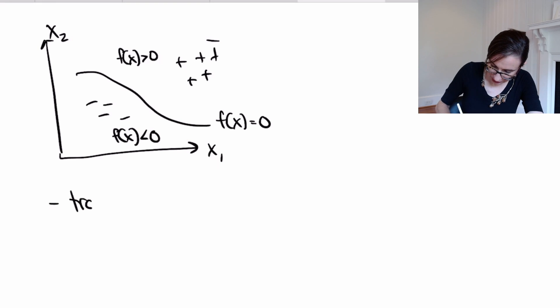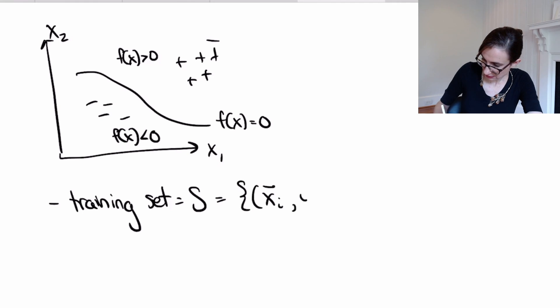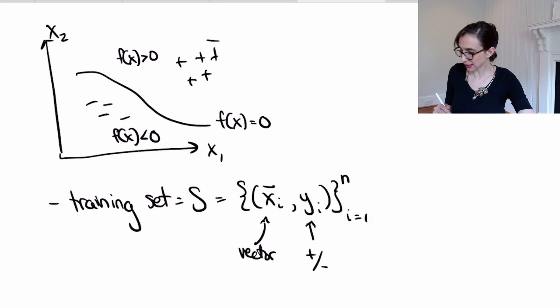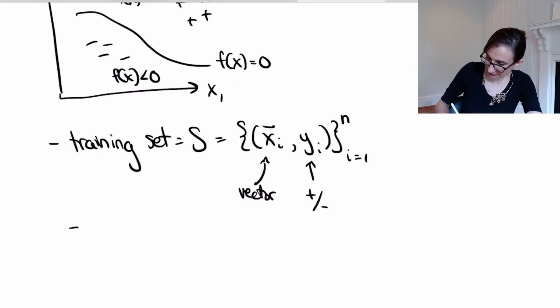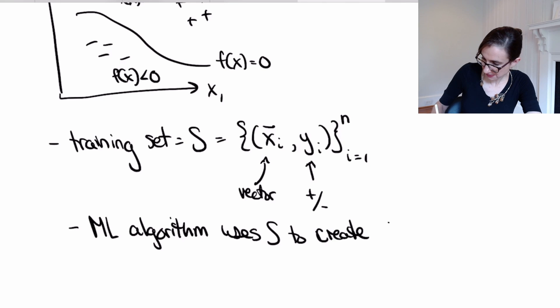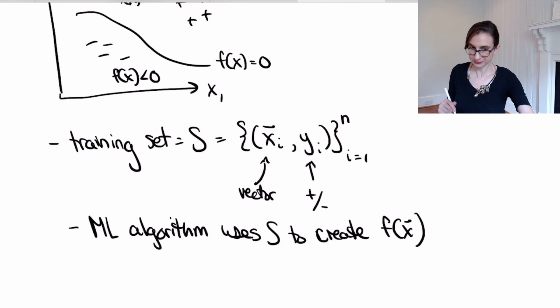So the training set that we use to train the model f of x is generally called S. So S is a collection of feature vectors and labels. And this is the typical notation. So x is a vector. And y, in this case, is plus or minus one. The labels can get much more interesting later, but for now we're just going to predict yes or no, the answers to yes or no questions. And then we will have a machine learning algorithm which uses the dataset S to create a model, to create our model f of x.